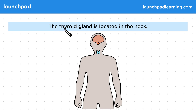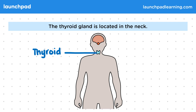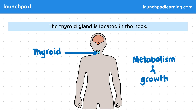The thyroid gland is located in the neck. In this diagram, it's this blue gland just here. The thyroid gland has an important role in controlling metabolism and growth.